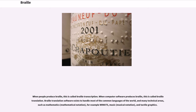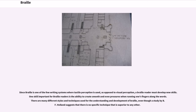Braille translation software exists to handle most of the common languages of the world, and many technical areas such as mathematics, mathematical notation (for example WMATS), music, musical notation, and tactile graphics. Since Braille is one of the few writing systems where tactile perception is used — as opposed to visual perception — a Braille reader must develop new skills. One skill important for Braille readers is the ability to create smooth and even pressure when running one's fingers along the words. There are many different styles and techniques used for understanding and developing Braille, even though a study by B.F. Holland suggests there is no specific technique that is superior to any other.